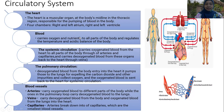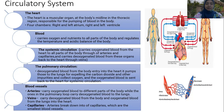Blood is not technically an organ but it has a vital function in the circulatory system. Blood carries oxygen and nutrients to all parts of the body and regulates the temperature and acid-base balance of the body.